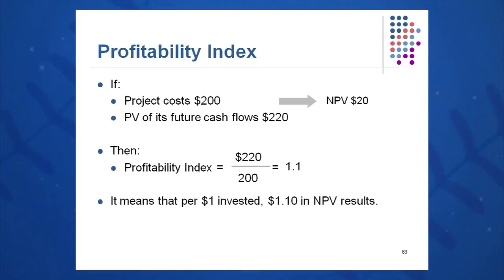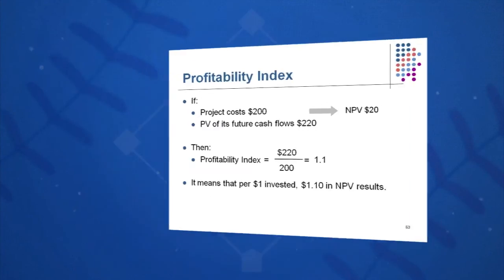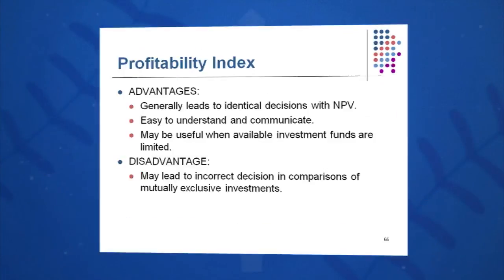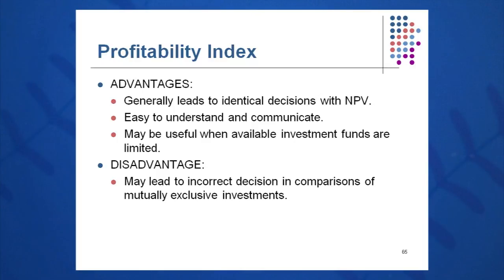So for every dollar invested, we get a positive $1.10 in NPV. We'll have a positive NPV when profitability is greater than 1, and it measures bang for the buck. It's often used in not-for-profits and government projects, is easy to understand and communicate, and should be identical in decision-making to the NPV.